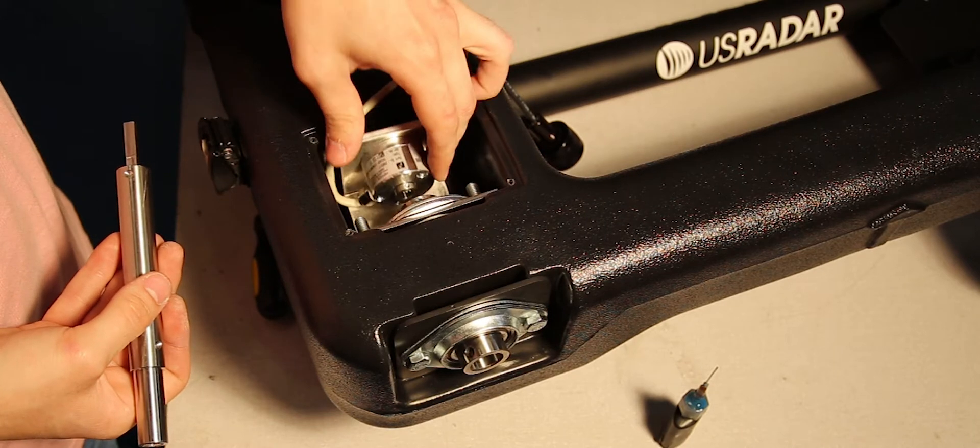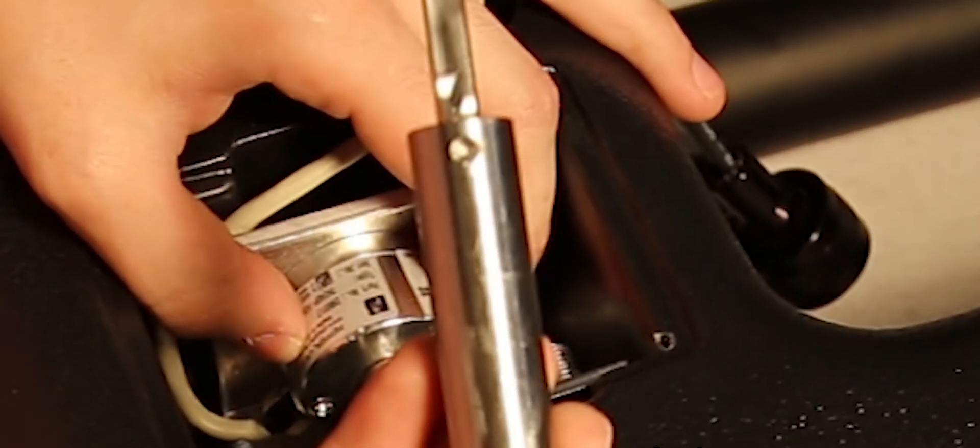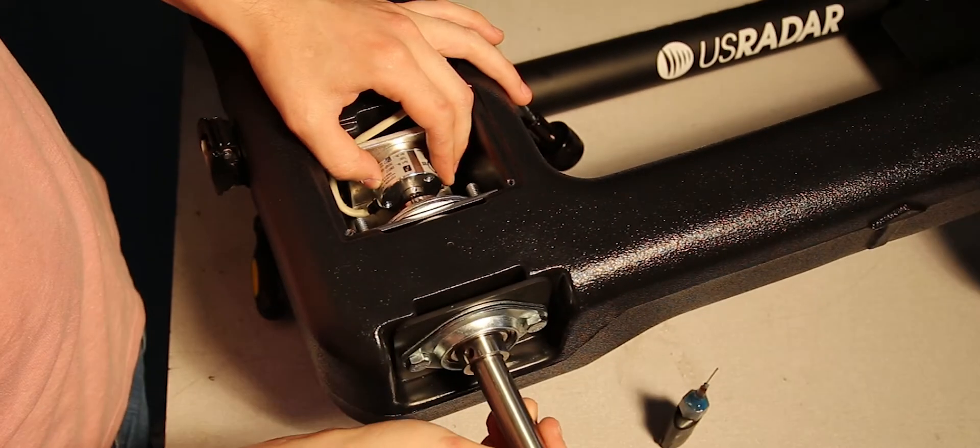Now place the encoder in the cavity. Notice the four dimples in the axle. Slide it into the flange bearings and the encoder sleeve.